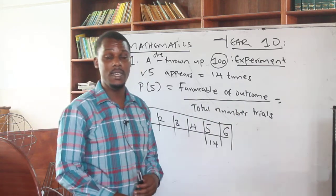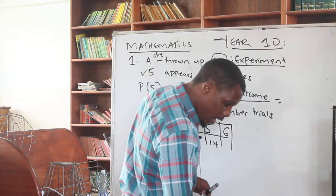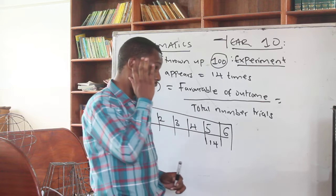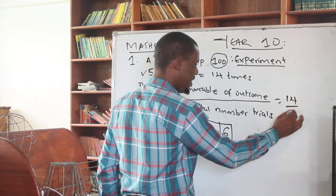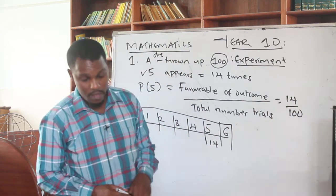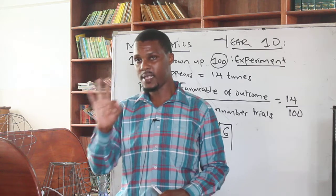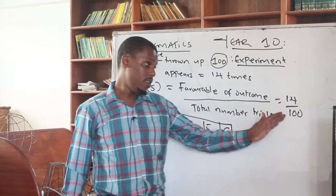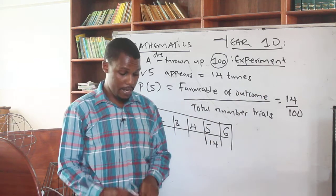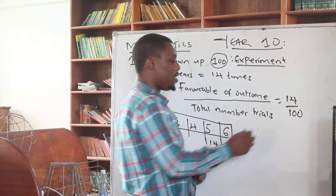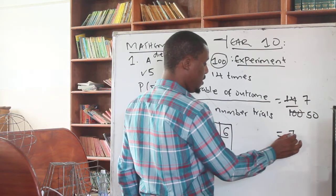You are told to give your answer in the simplest form, so you have to simplify. The answer is 14 over 100. Remember, as we said in our last lesson, probability can be expressed in terms of a fraction, a decimal, or a percentage. In our case, we are told to give the probability as a fraction in the simplest form. So if you give 14 over 100, you have to simplify by eliminating the common factor. Dividing by 2 gives us 7 over 50. So the answer is 7 over 50.